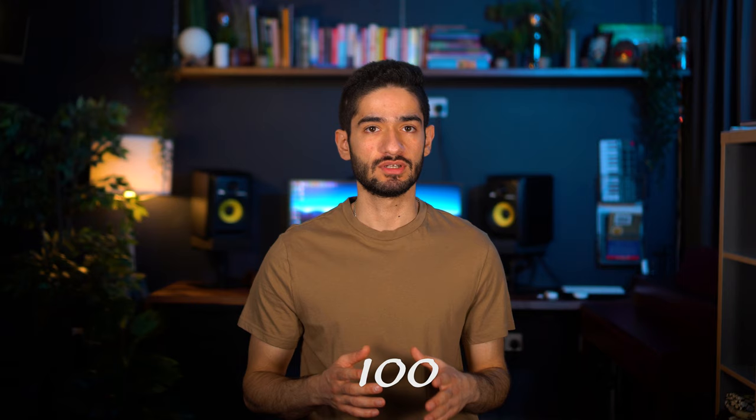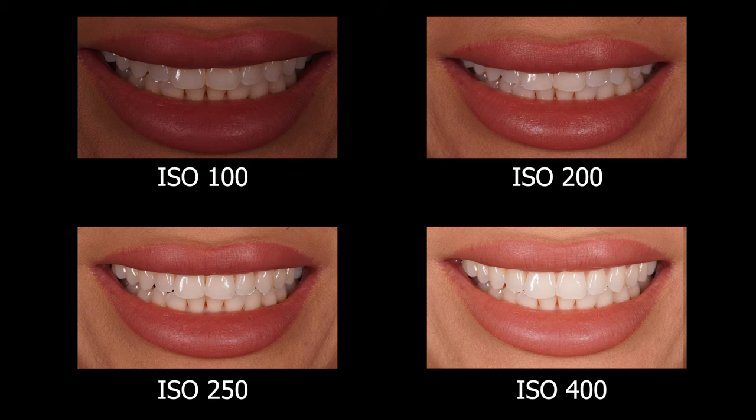In dental photography we use flashes to provide lots of light so we can keep the ISO as low as possible so our photos don't look grainy. The recommended ISO is 100 — the lowest it can go. Just remember for troubleshooting: if you increase the ISO, your photos will look brighter.